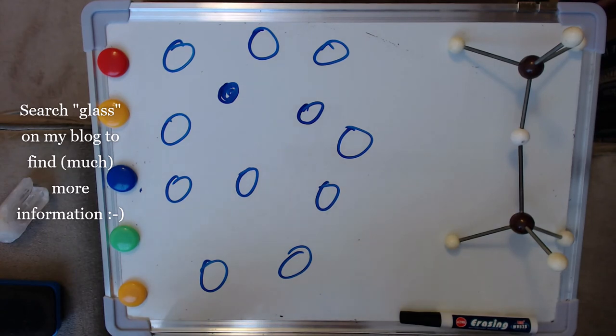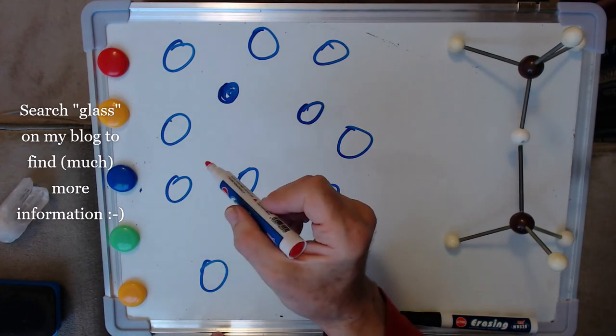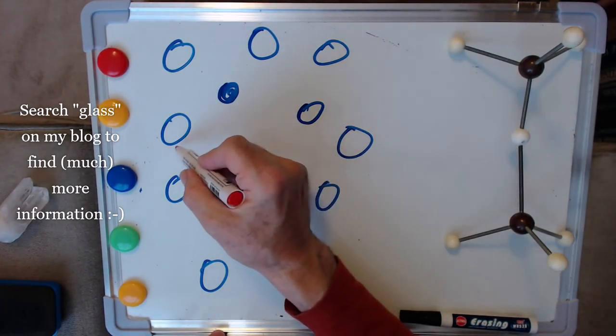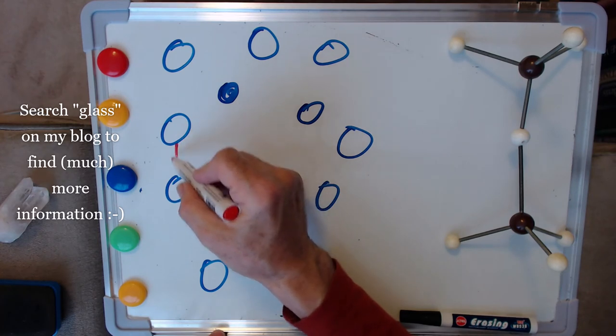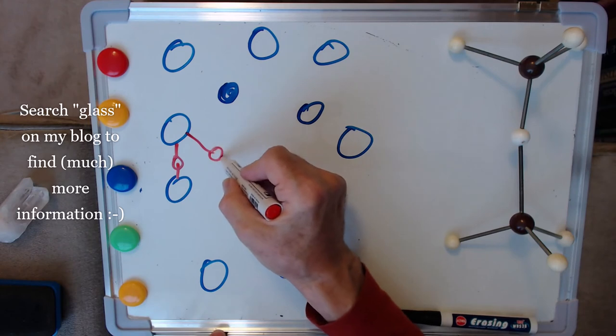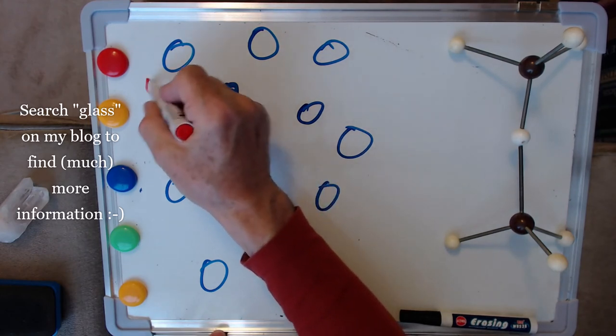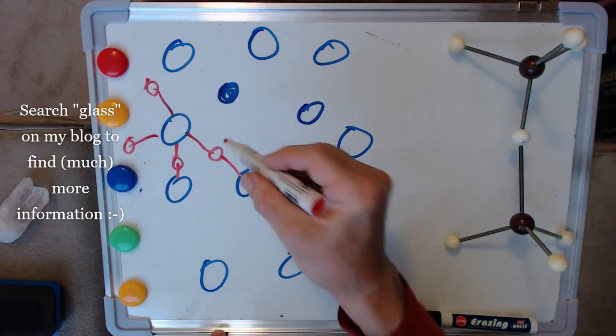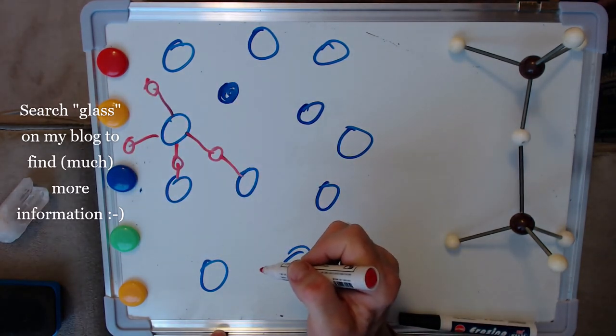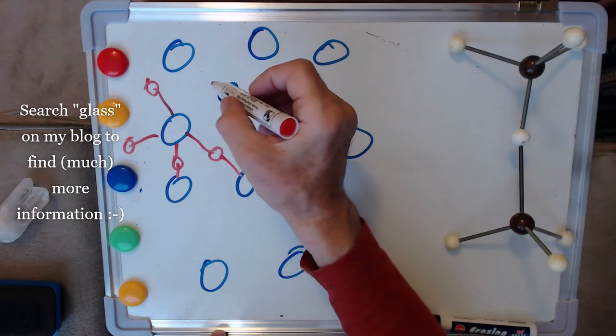And on each of those silicon atoms we're going to have oxygen atoms. So on average we're going to have oxygen atoms either bridging to other silicon atoms or just sitting out there in space, as it were.